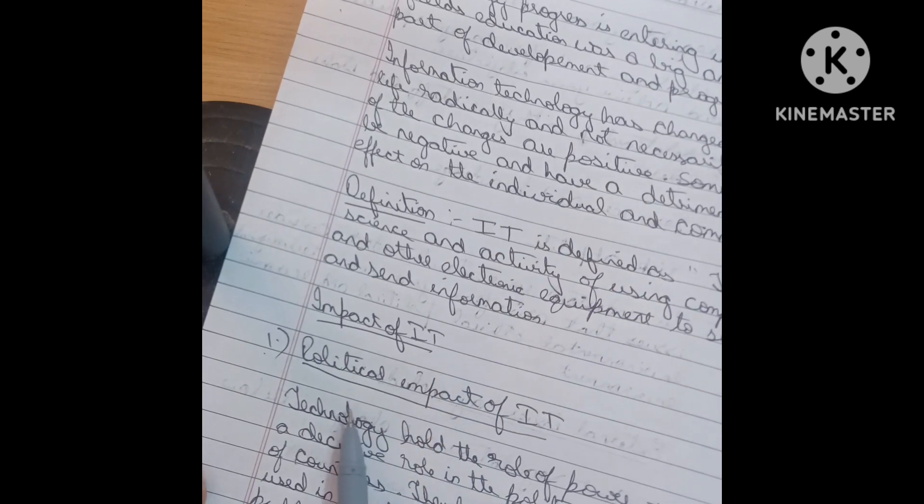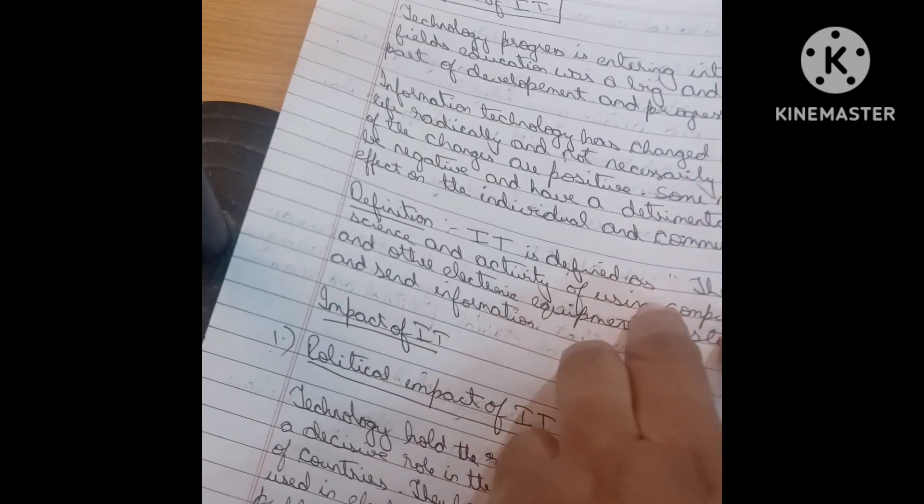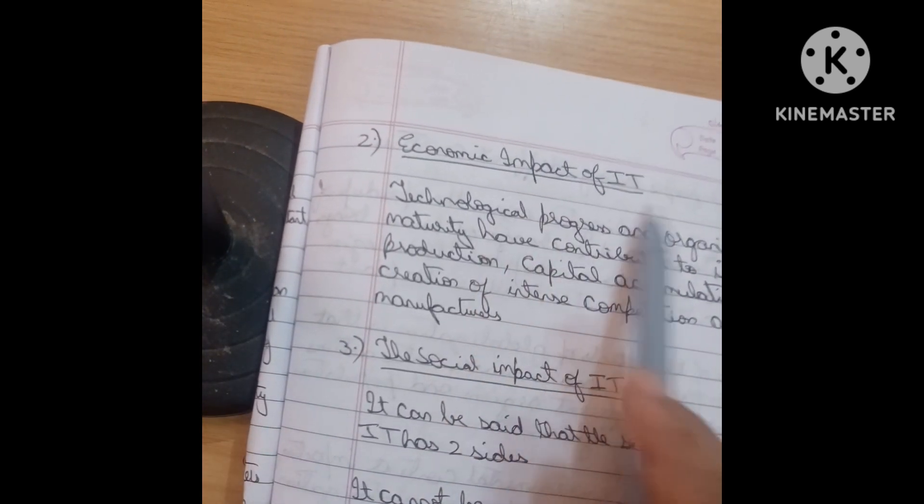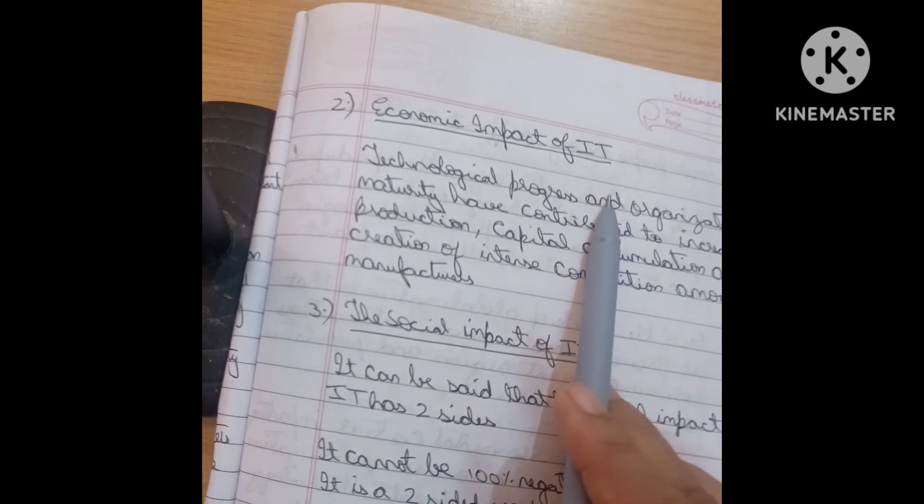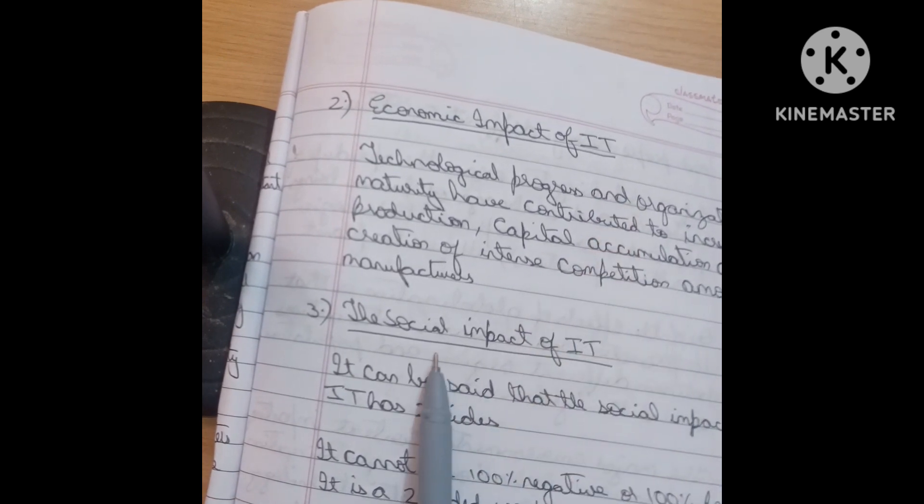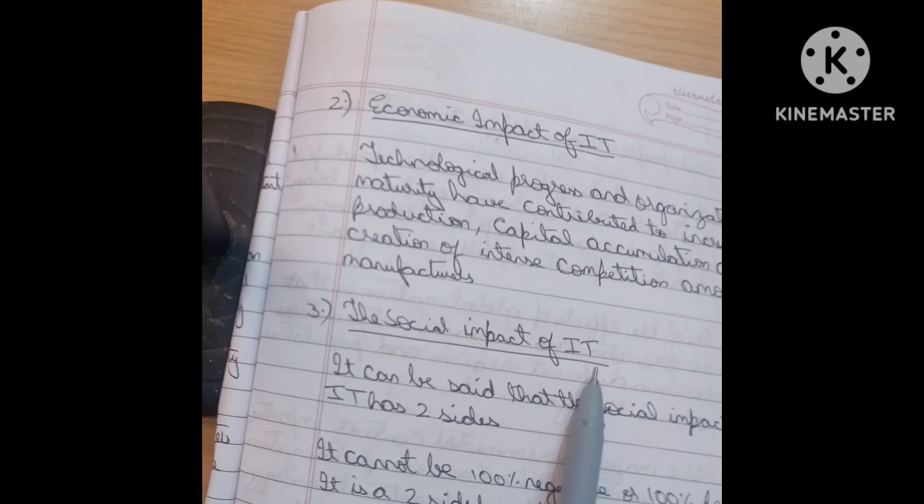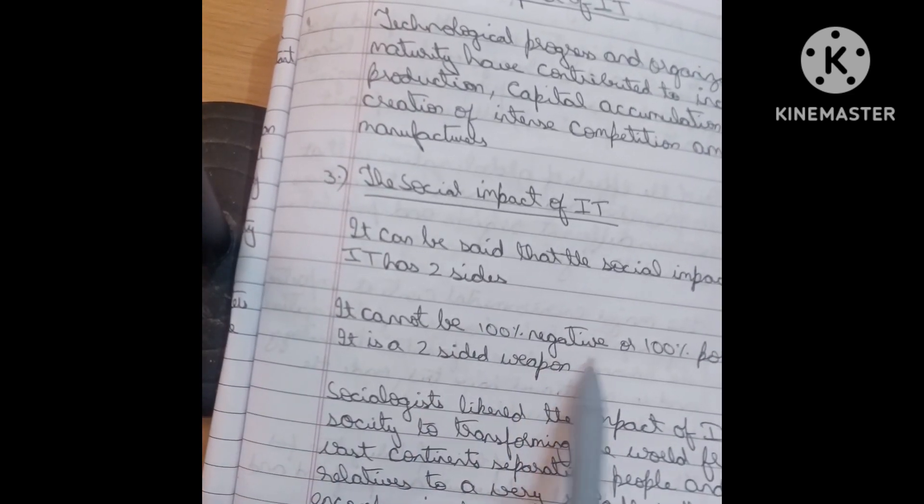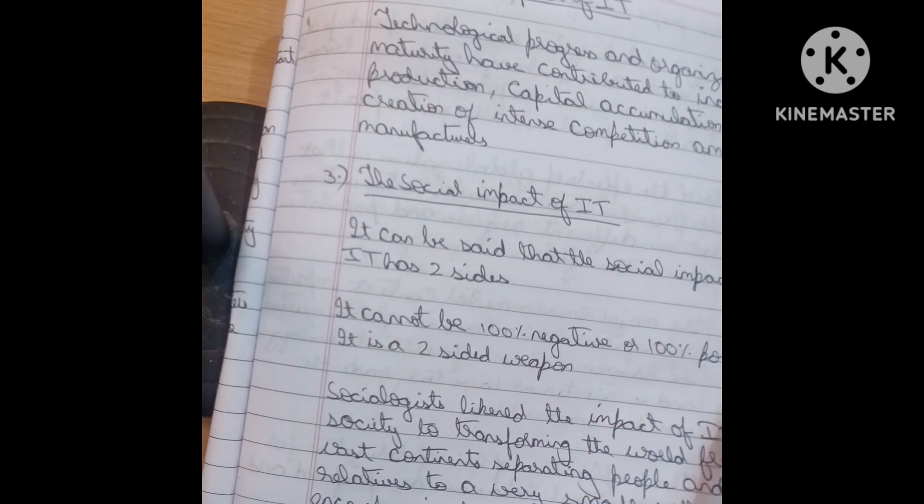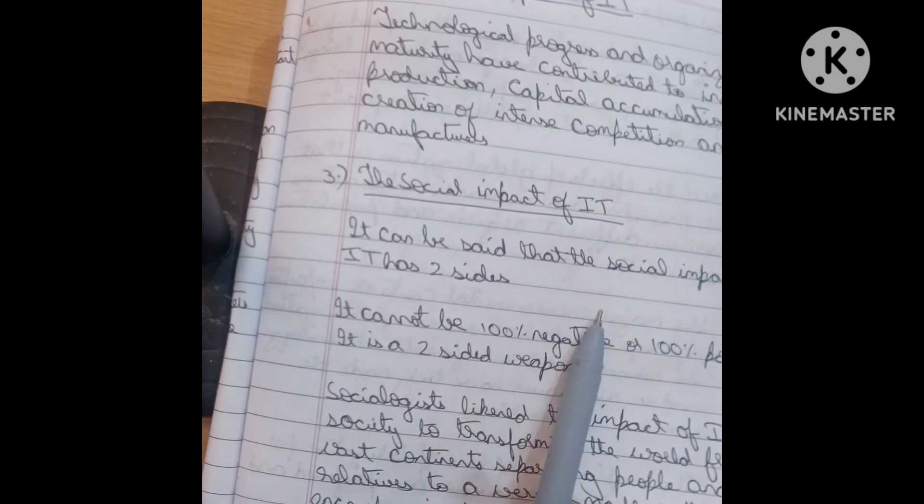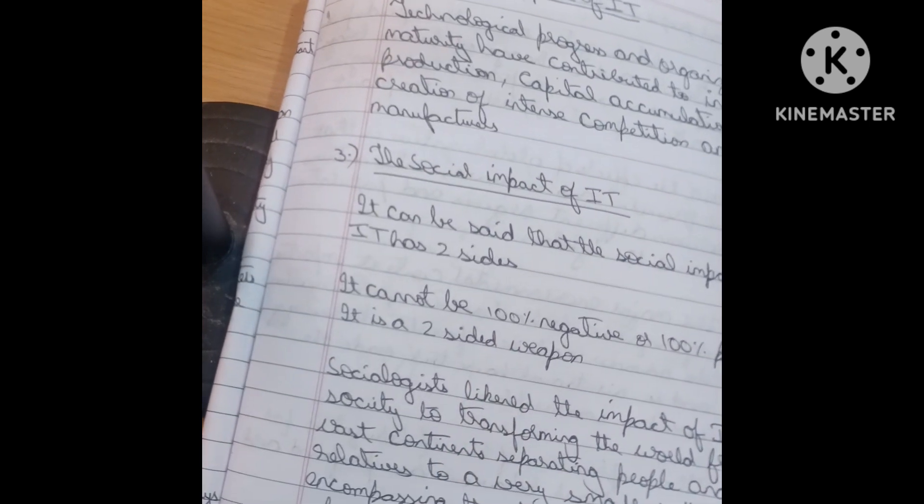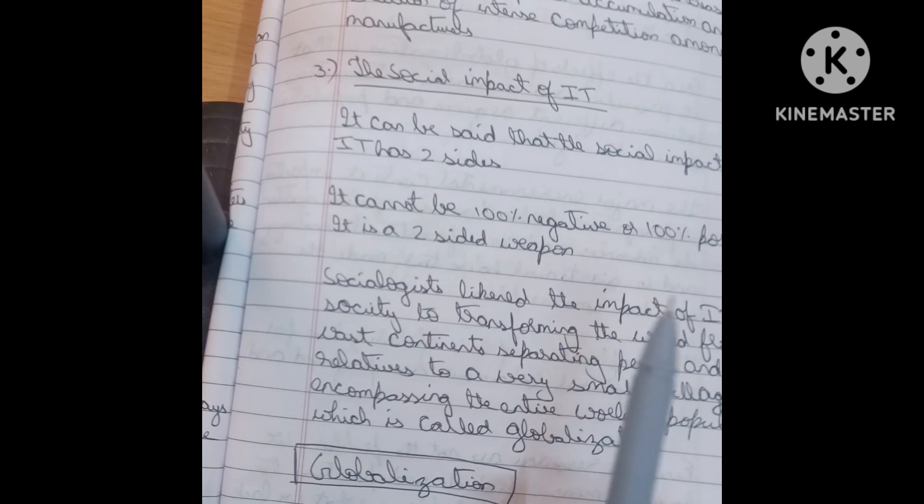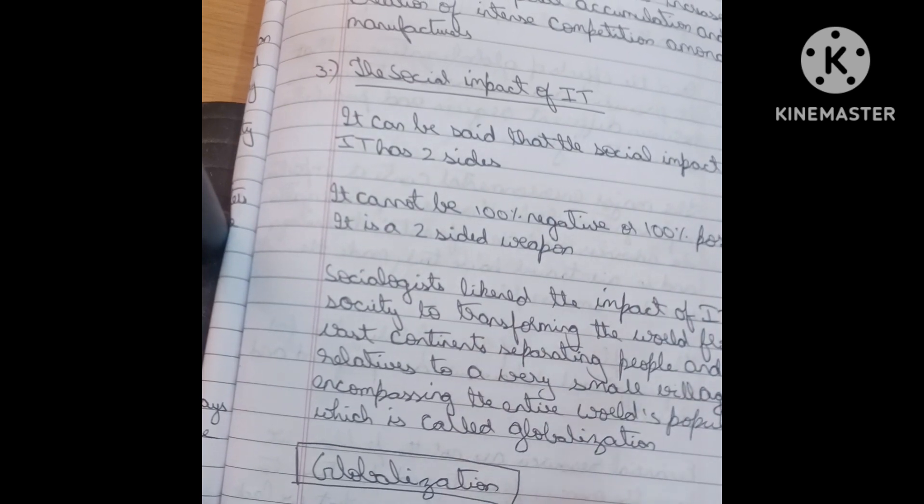The impact of IT, political impact of IT, you have to write it. Next, economic impact of IT. Economically, how IT will be increased. Next, the social impact of IT, in the social impact of IT, it has two sides. It cannot be 100% negative or 100% positive. Two sides, IT is impacted by the social, in the social network or in the society. We just explain how the IT is impacted in our social life.